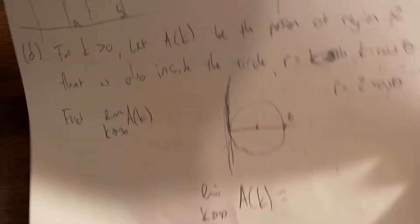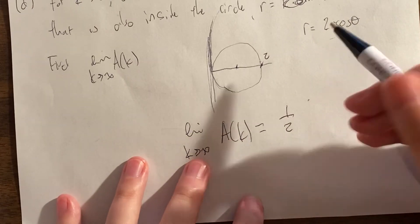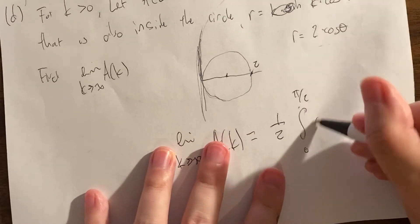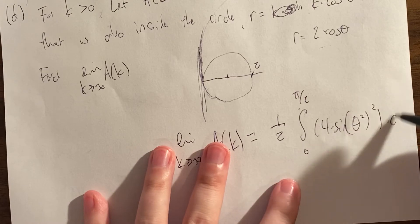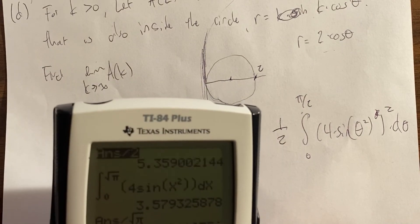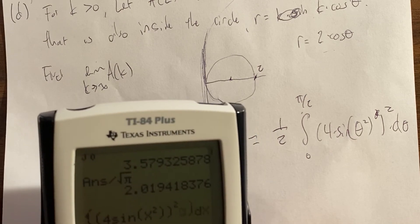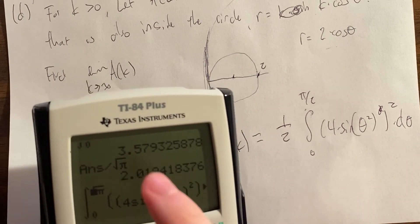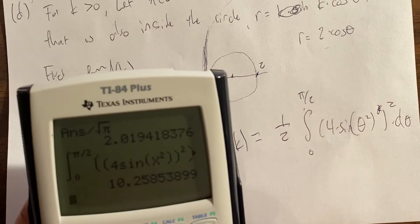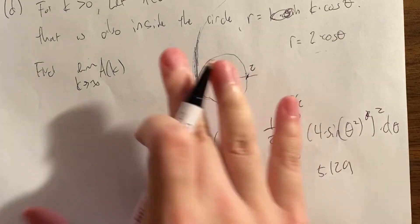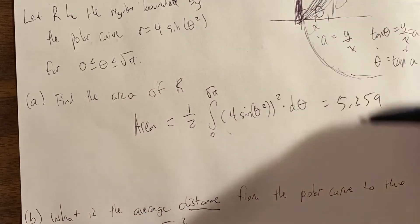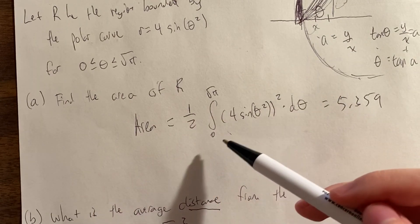So we go from zero to pi over two, type in the formula where r squared is four sine theta squared, giving one half times (four sine theta squared) squared d theta. The top limit changes from square root of pi to pi over two. We divide by two for the one half, getting an answer of 5.129. If you subtract 5.129 from the total area, you get the small remaining area — the integral from pi over two to square root of pi of one half r squared.